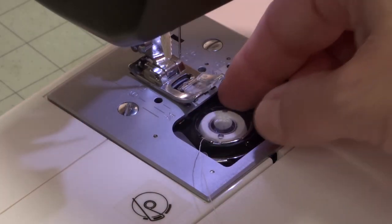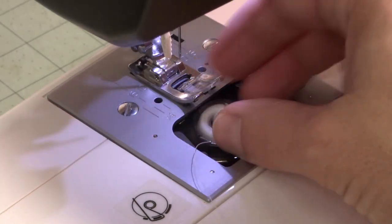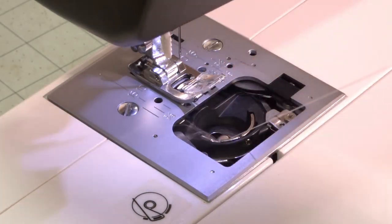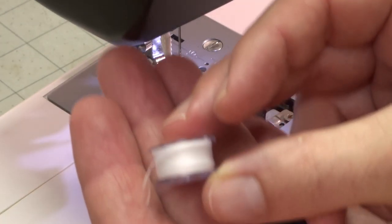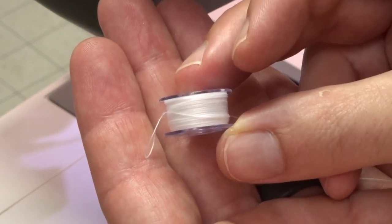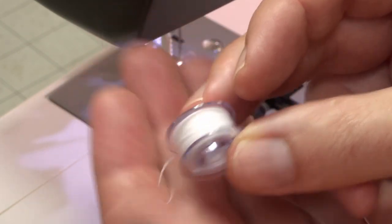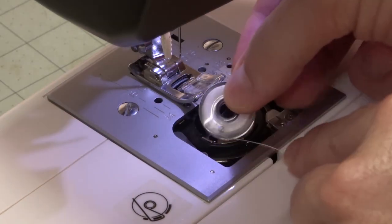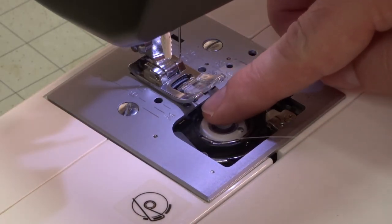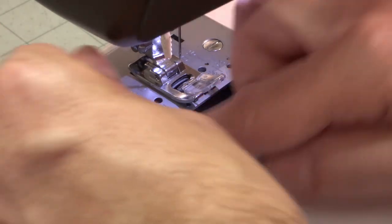The type of bobbin, because this bobbin is flat on the sides and it's a relatively thick bobbin, this is a class 15 bobbin, very standard type bobbin for a lot of machines.